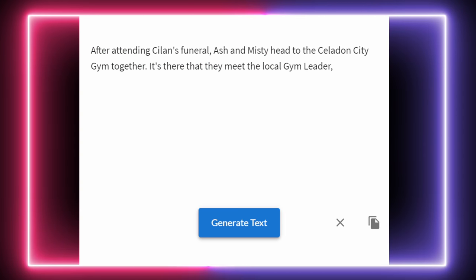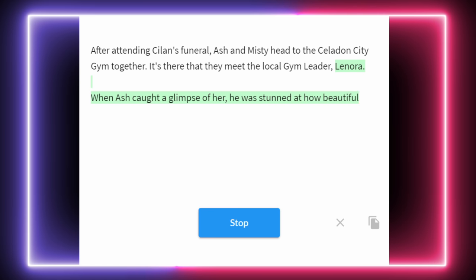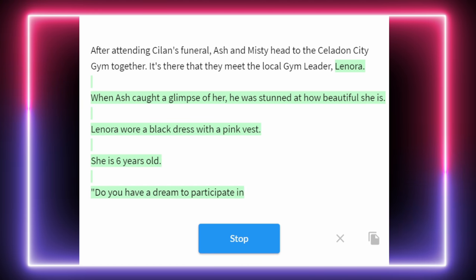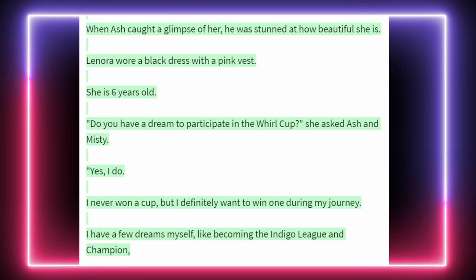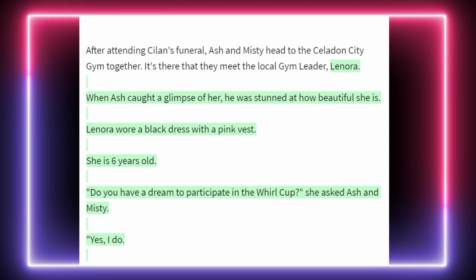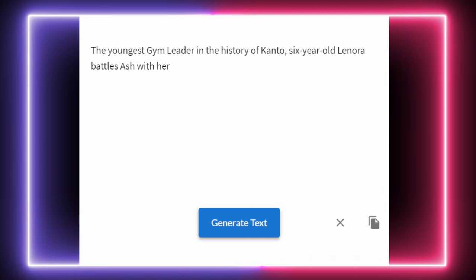After attending Silen's funeral, Ash and Misty head to the Celadon City gym together. It's there they meet the local gym leader — Lenora. When Ash caught a glimpse of her, he was stunned. Lenora wore a black dress with a pink vest. She is six years old. 'Do you have a dream to participate in the World Cup?' she asked Ash and Misty. 'Yes, I do. I never won a cup but I definitely want to win one during my journey.' Just too many issues with this. But let's just take on board that a six-year-old named Lenora is the gym leader in Celadon City. You are on thin ice, AI.